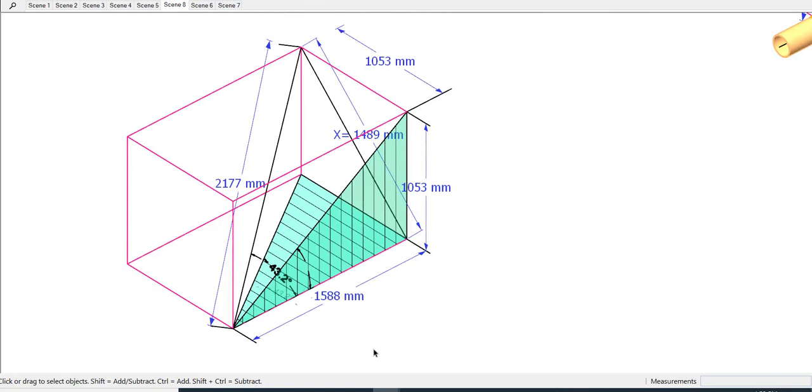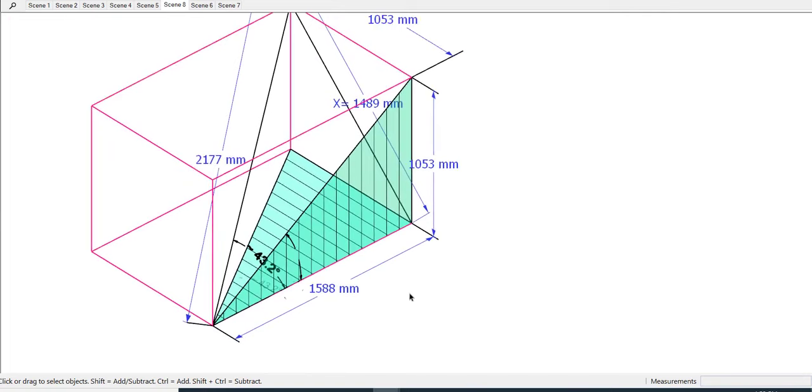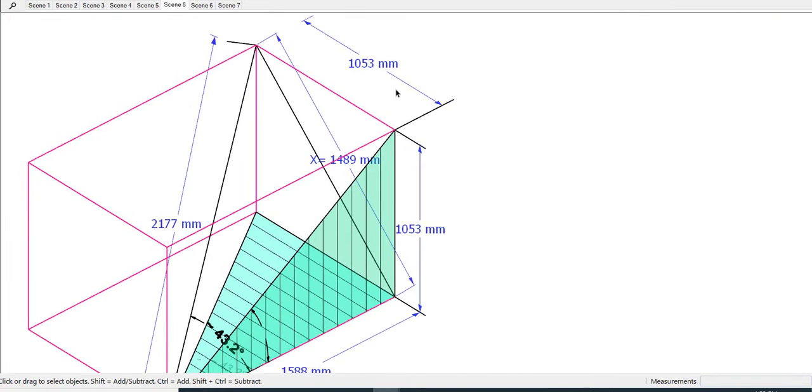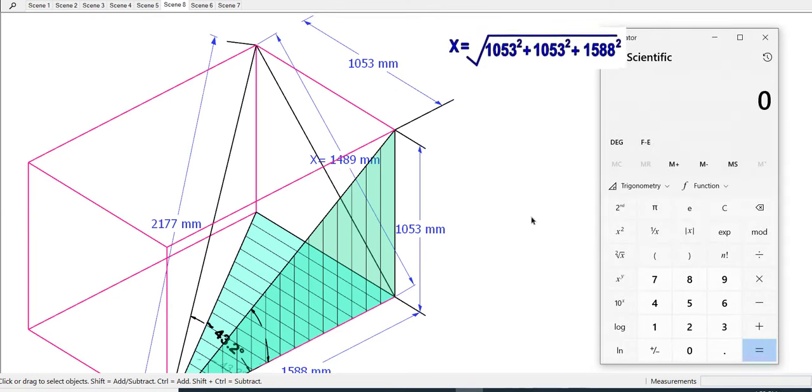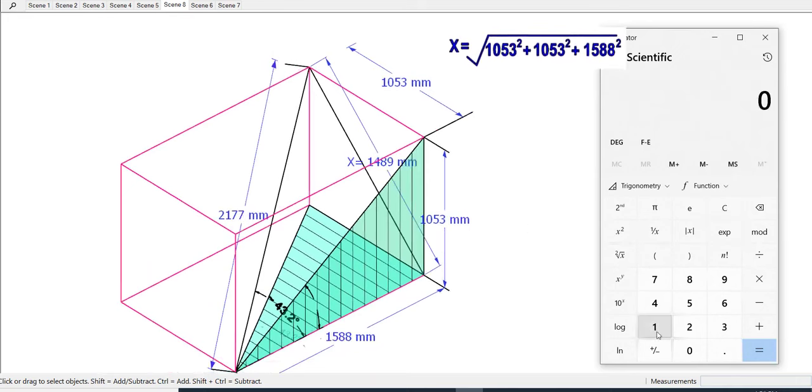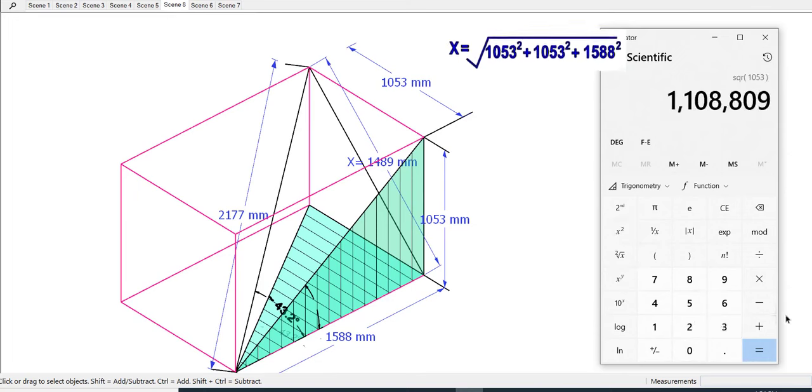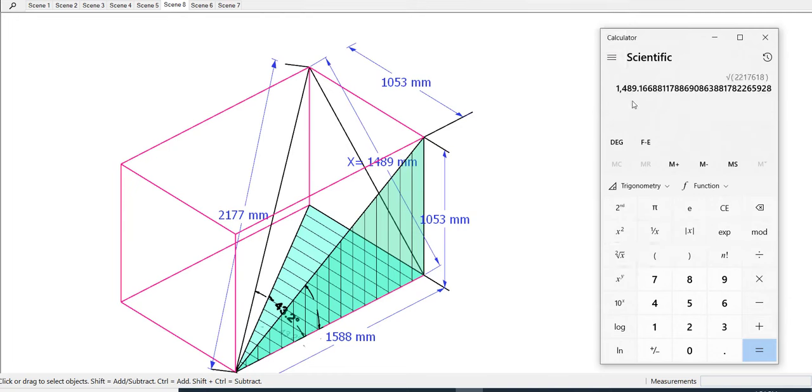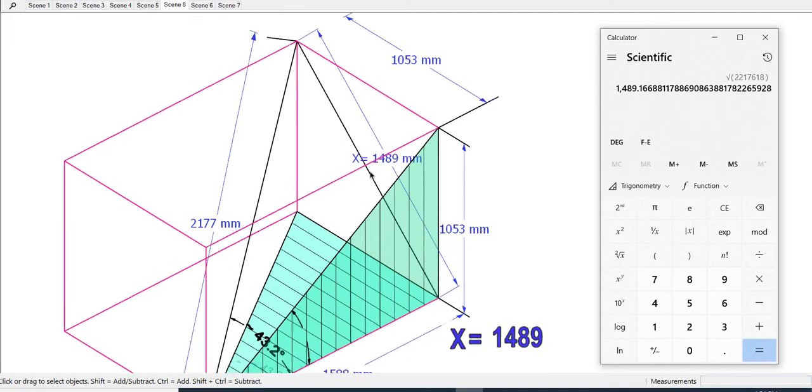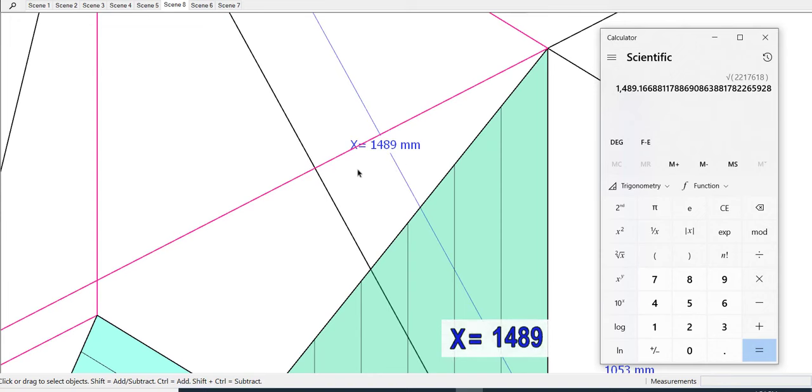I have already added the values given by the computer. Let us cross check if these values are correct. The value of X is 1489 millimeters.